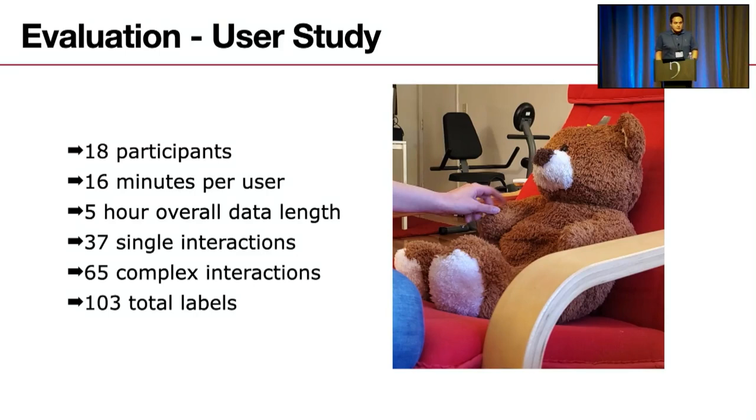For our evaluations, we asked 18 participants to spend 16 minutes with our toy. Now this action-packed 16 minutes consists of 37 single interactions followed by 65 complex interactions. Complex interactions in case of Fabtoy means interacting with the toy with both hands, each hand performing a different interaction. Considering idle state, we have 103 total labels for our microprocessor classifiers to figure out what's going on. Please note that we did these evaluations and did this project in the peak of COVID. It wasn't really easy to get an IRB approval for studying with children, but we know the importance of actually doing this project and studying the effect on children, so our group is actively pursuing collaboration with psychology experts to move this project forward and see the effects on the children.